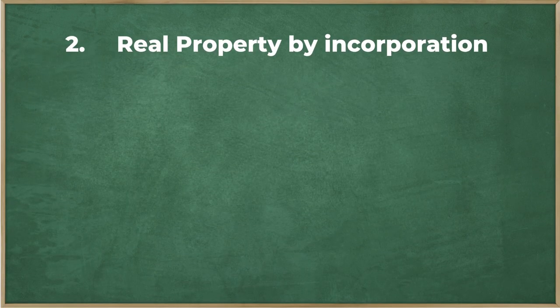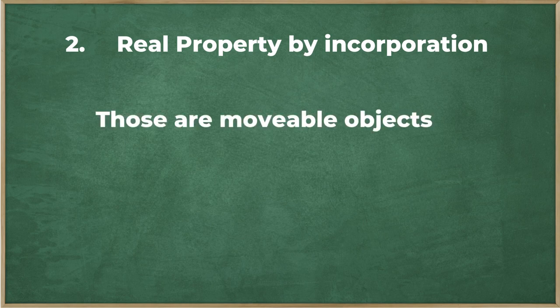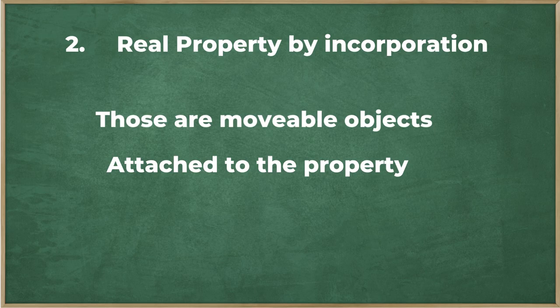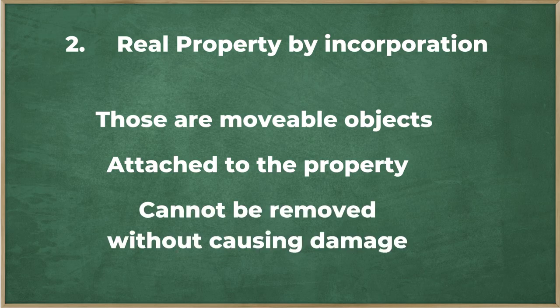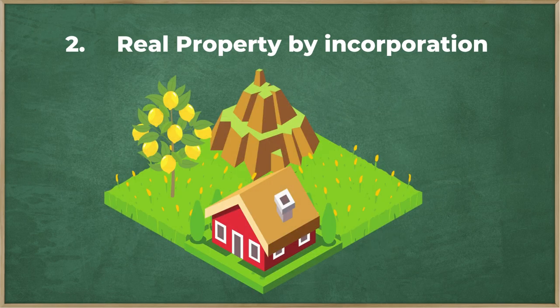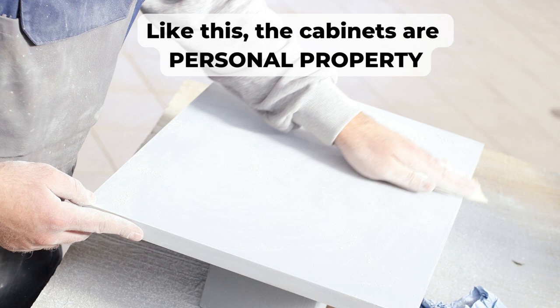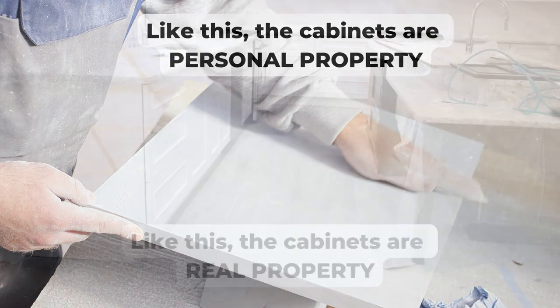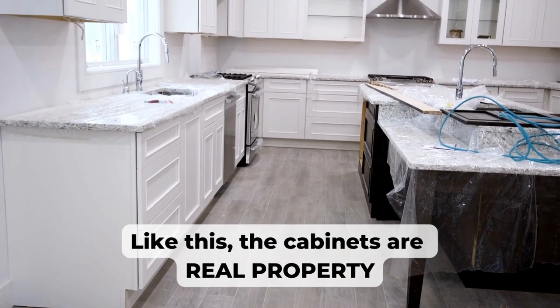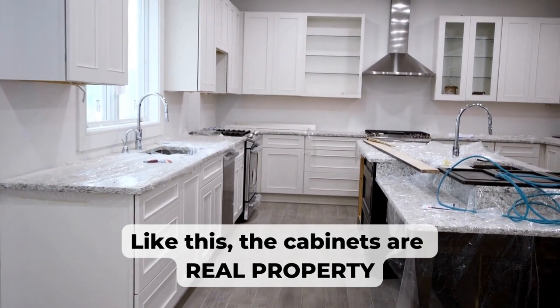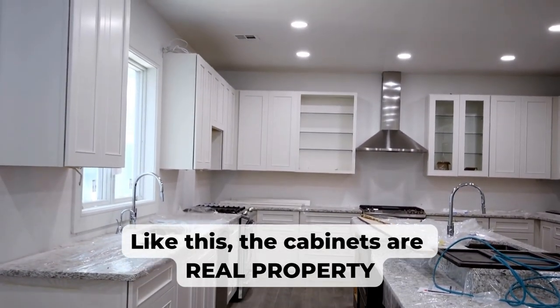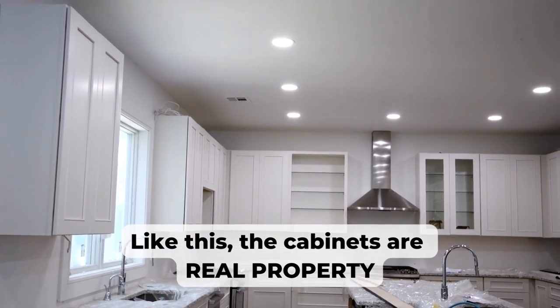Number two: real property due to incorporation. These are objects initially considered movable. Once they are incorporated in the property, they cannot be removed without causing damage. Any item, fixture, or property that falls under this is real property by incorporation. Imagine the same house, but you want to install new kitchen cabinets. When you buy them at the hardware shop, you can take them home and move them around — it's personal property. Once the cabinets are installed, you cannot separate them from the house without causing damage. It was initially personal property and then converted to real property by its incorporation.